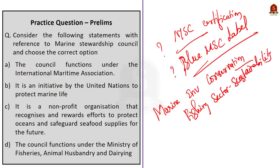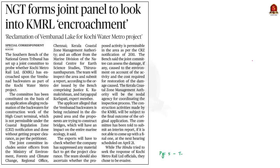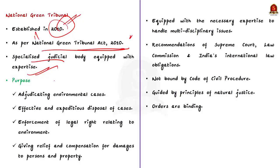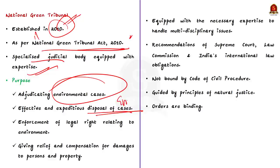Now let's look at the next article. The southern bench of the National Green Tribunal has set up a joint committee to probe whether Kochi Metro Rail Limited has encroached upon the Vembanad backwaters as part of the Kochi Water Metro project. It is alleged that the backwaters are being reclaimed in the disputed area and proponents are trying to construct bridges which will impact the entire marine ecology. In this context, let us see about the National Green Tribunal from a prelims perspective.